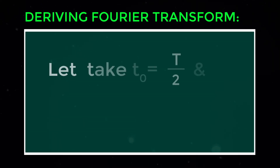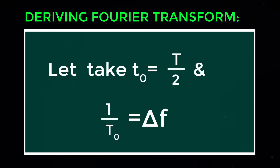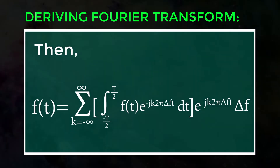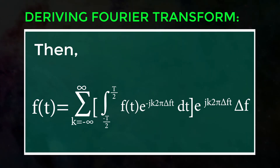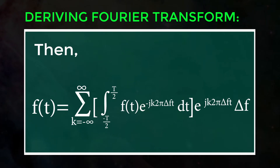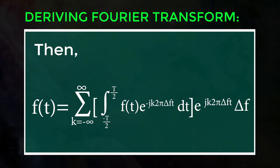Let T₀ = -T/2 and 1/T₀ = Δf. Then f(t) = Σ (k = -∞ to ∞) of ∫ (-T/2 to T/2) of f(t) · exp(-j·k·2π·Δf·t) dt · exp(j·k·2π·Δf·t) · Δf.